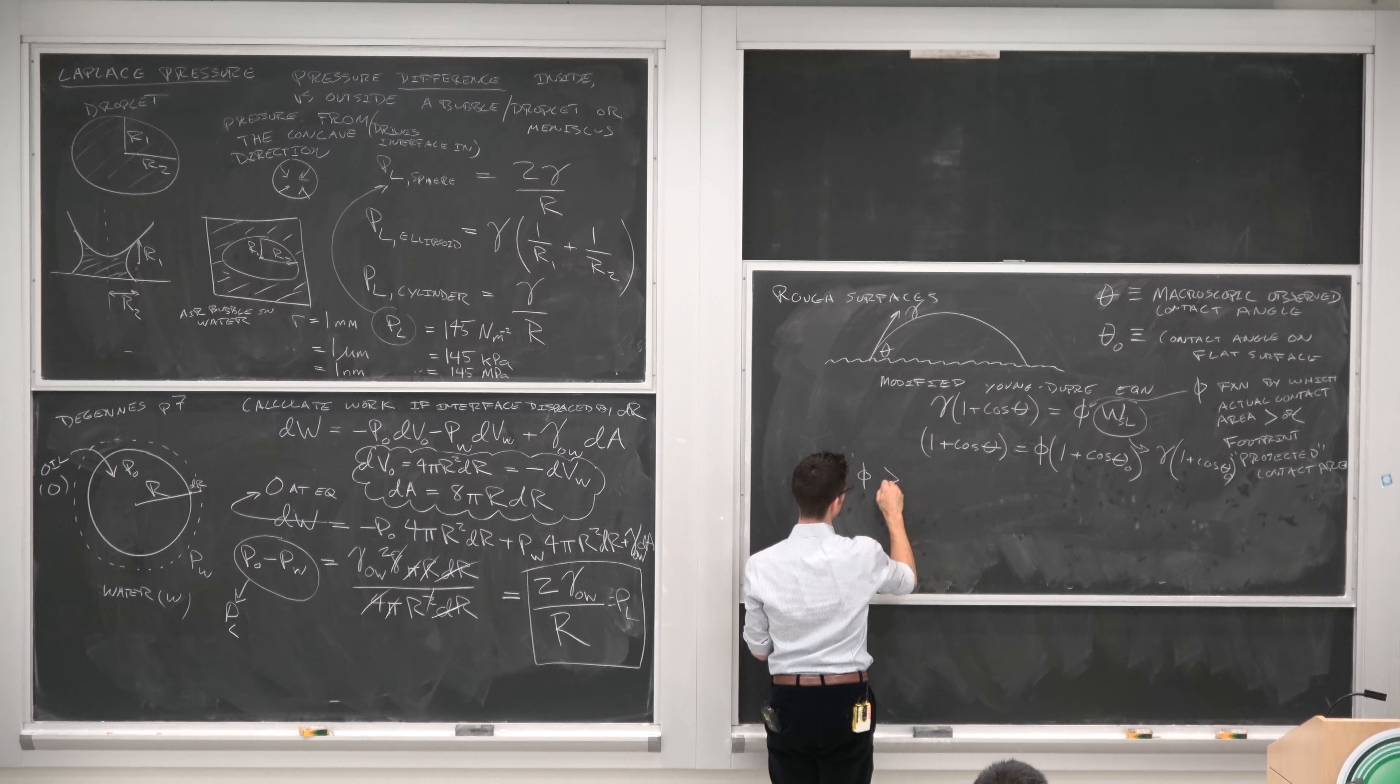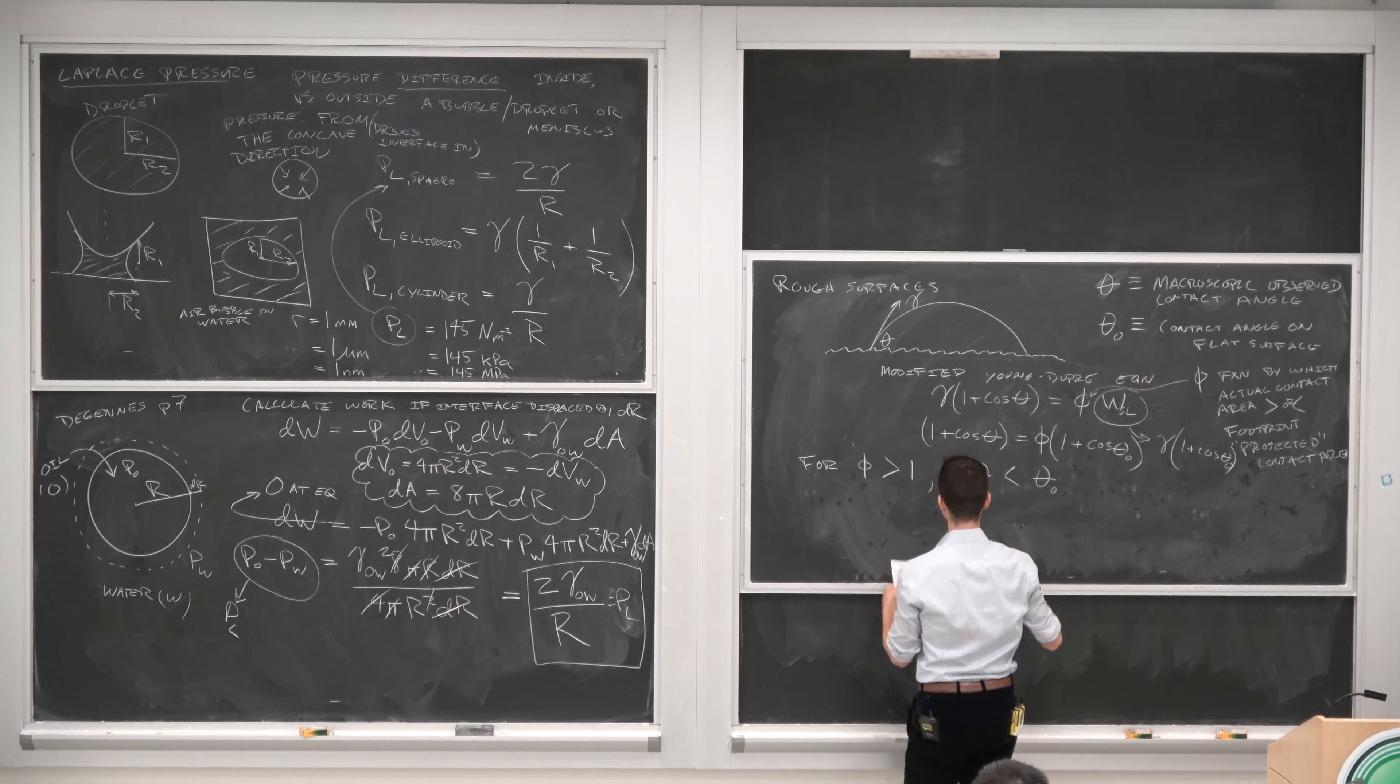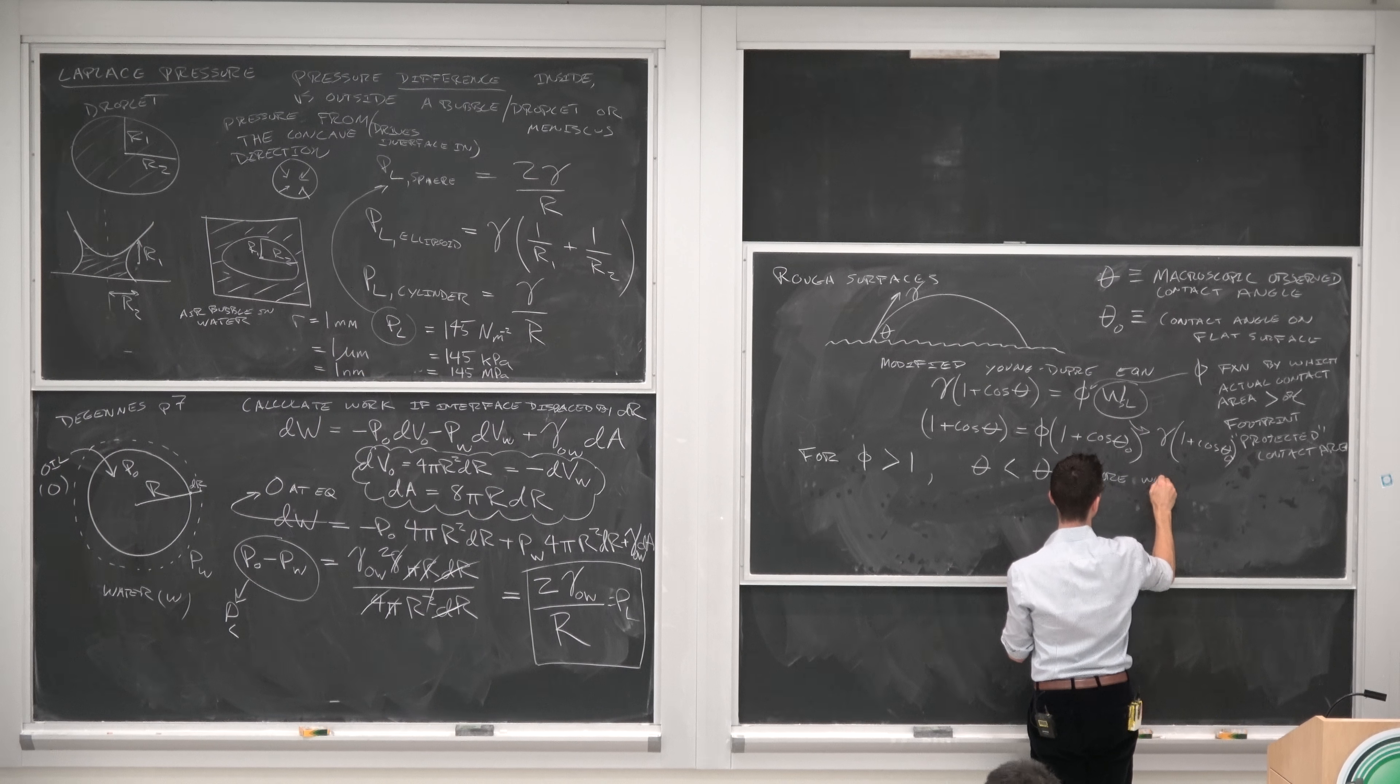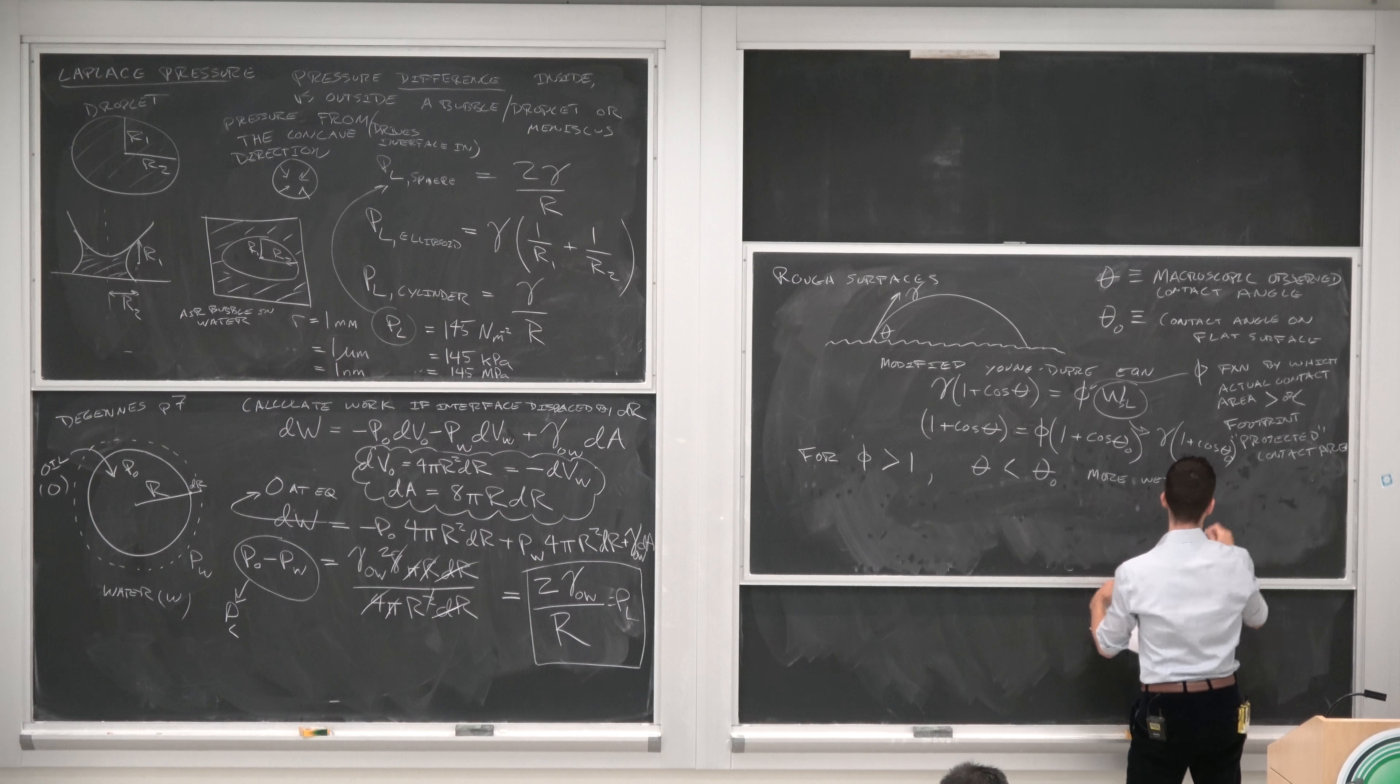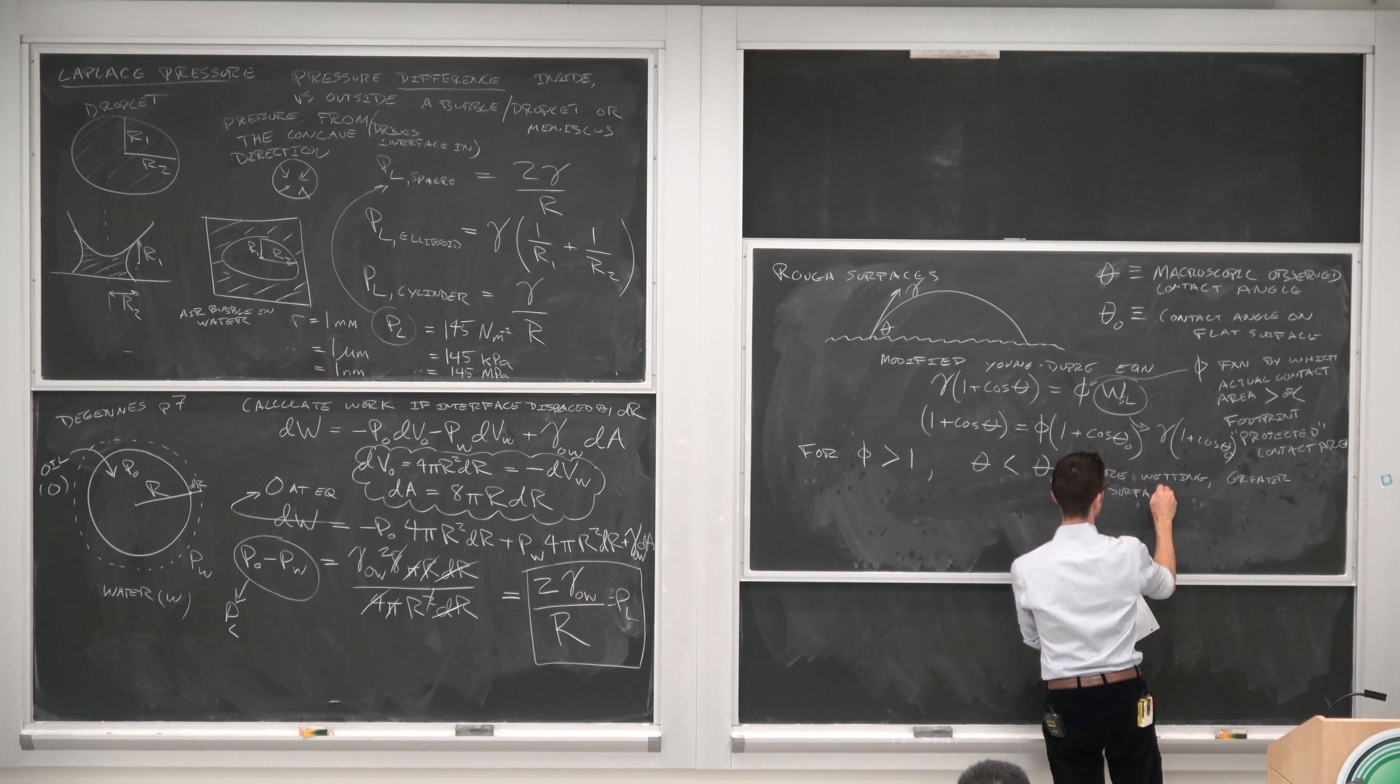So what does this tell us? It tells us that for phi greater than 1, the observed contact angle is actually going to be less than the contact angle on a flat idealized surface. And this gives you more wetting and greater surface adhesion.